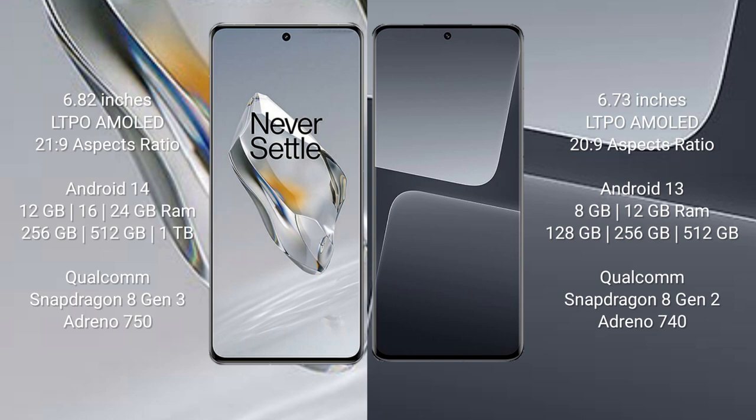OnePlus 12 runs on the Android 14 operating system. Xiaomi 13 Pro runs on the Android 13 operating system. OnePlus 12 comes with 12GB, 16GB, or 24GB RAM and 256GB, 512GB, or 1TB internal storage, with a Qualcomm Snapdragon processor.